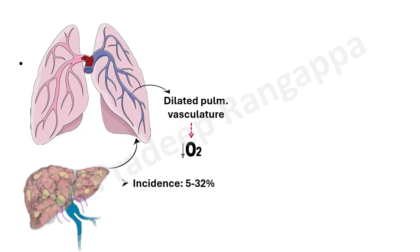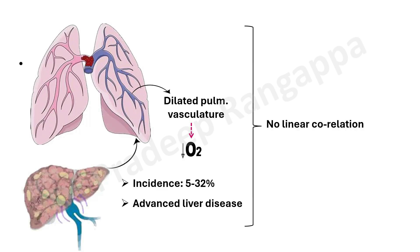The incidence of hepatopulmonary syndrome is 5 to 32 percent in patients with cirrhosis. Importantly, patients do not necessarily need to have cirrhosis — even the presence of portal hypertension itself is a reason they can develop hepatopulmonary syndrome. It is generally seen in advanced liver disease, but there is no linear correlation with severity of liver disease. The key criterion is the presence of portal hypertension.